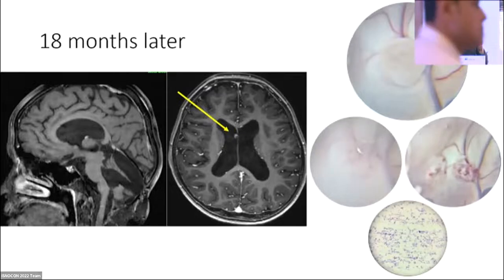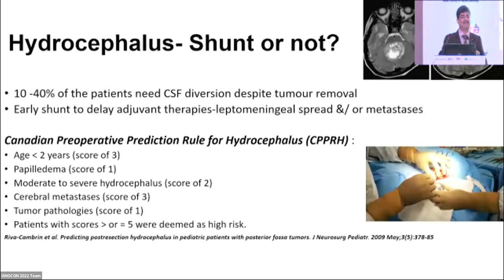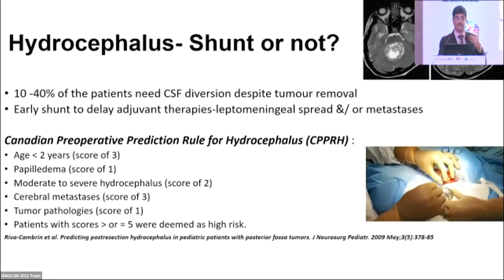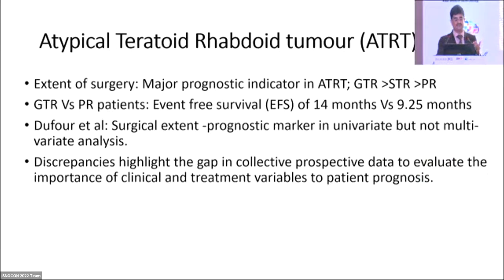A major dilemma is hydrocephalus management — the majority of children have hydrocephalus. If needed, do not hesitate to perform a shunt, because delaying it can delay adjuvant therapy. Get the patient ready for adjuvant therapy with appropriate hydrocephalus management. ATRT is not very common but is much more challenging as it occurs in a much younger age group, often supratentorial.